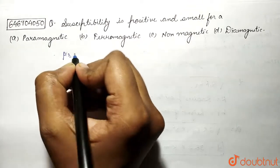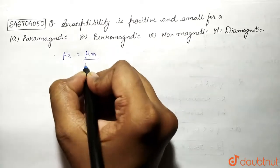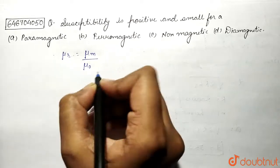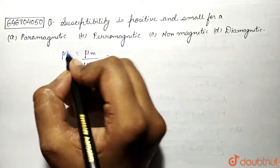the relative permeability is the ratio of permeability in the medium upon permeability in air. Okay, so basically relative permeability